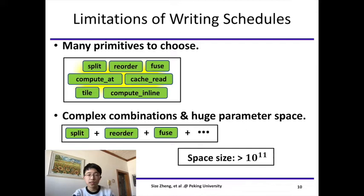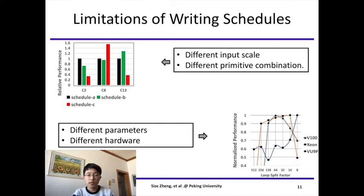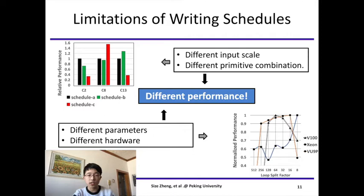We did some experiments to show the difficulty in writing schedules. In the first figure, C2, C8, and C13 are 2D convolutions of different input scales. Schedule A, B, C differ in primitive combinations. This shows that different primitive combinations and even different input scales can result in different performance. The second figure shows impact of schedule parameters. We use 2D convolution with the same primitive combination but different parameters on different hardware. We can see that the performance varies differently. From these examples, it's clear that writing an optimized schedule on heterogeneous systems presents huge challenges for programmers.